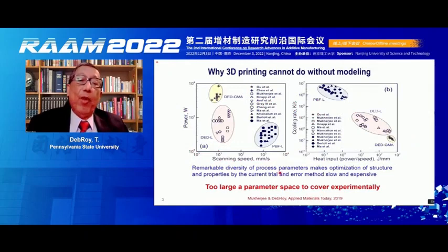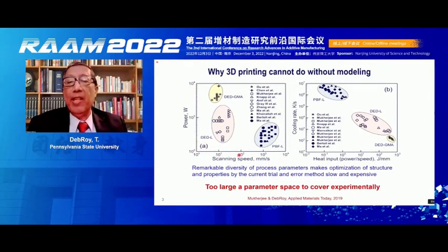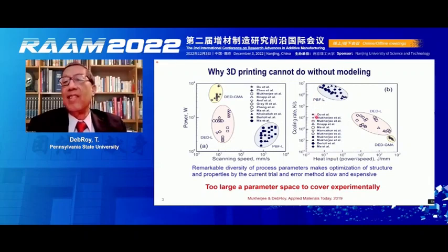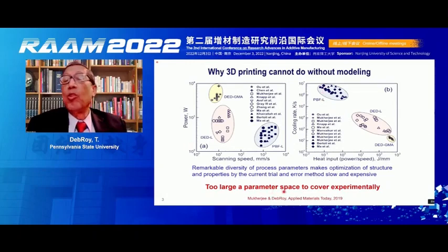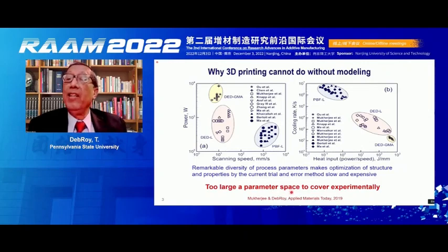Second, for a given variable — say, power — there is a wide variation of power. There is also a wide variation of scanning speed. Most importantly, there is a wide variation of cooling rate. Such high variation of cooling rate results in very different microstructures and properties of parts. So not only are there many variables, but for each variable, the parameter space is so large that it is difficult to explore the entire parameter space experimentally. One can use models to do so.